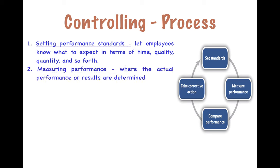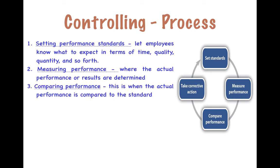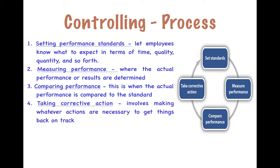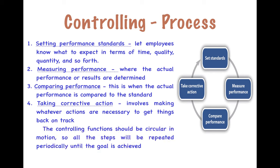Secondly, we measure performance, where the actual performance or results are determined. The third step is comparing that performance — this is when actual performance is compared with the standard. And fourth, we take corrective action, which involves making whatever actions are necessary to get things back on track. This is a circular motion, so all the steps will be repeated periodically until the goal is achieved.